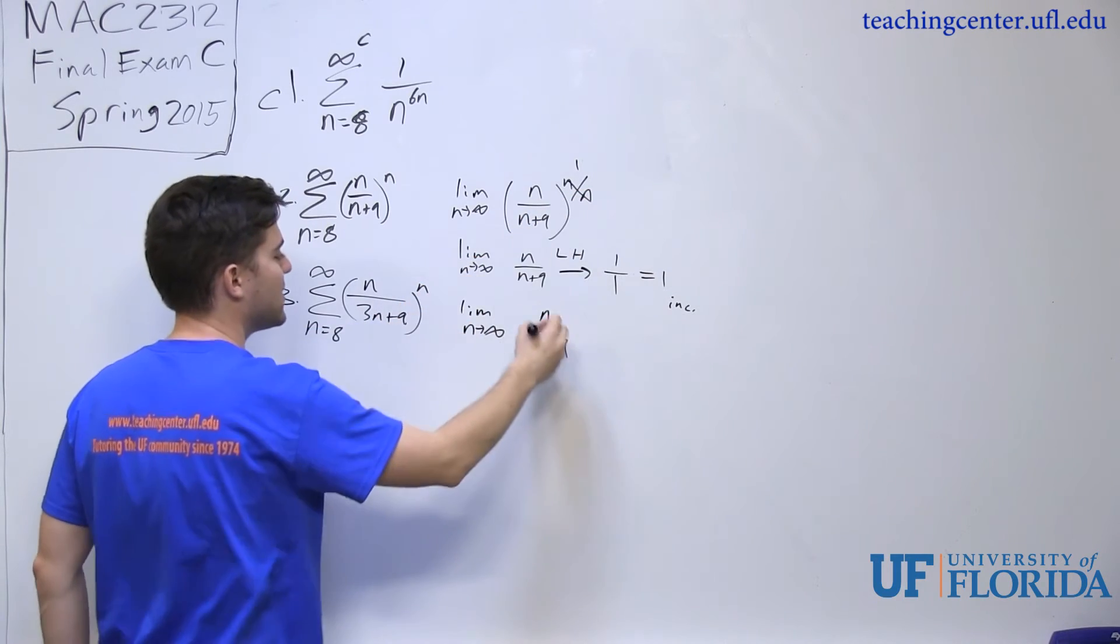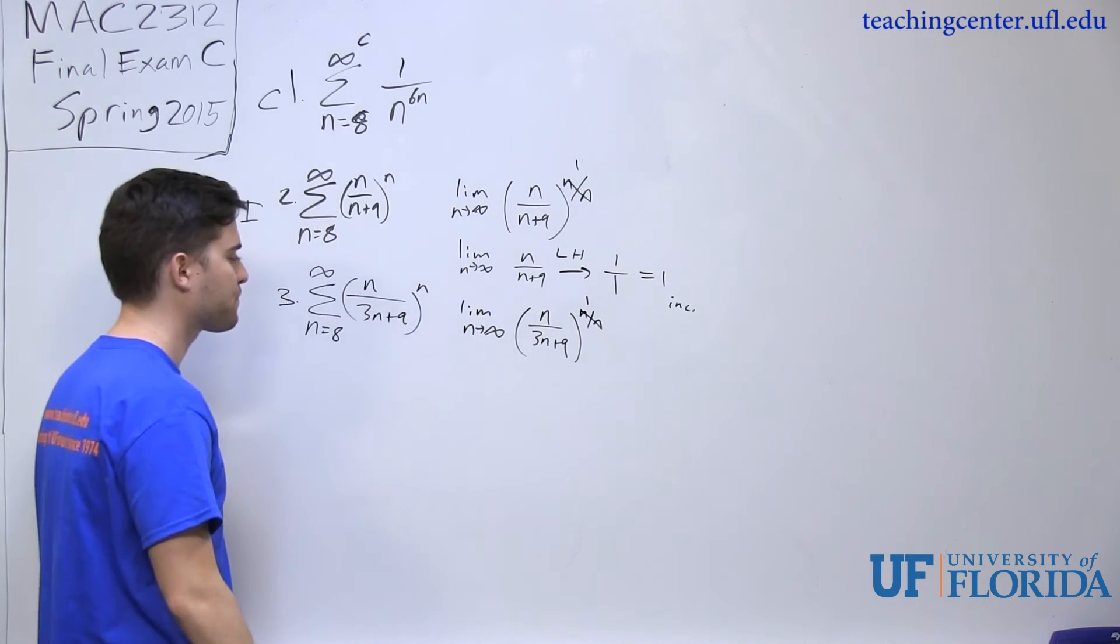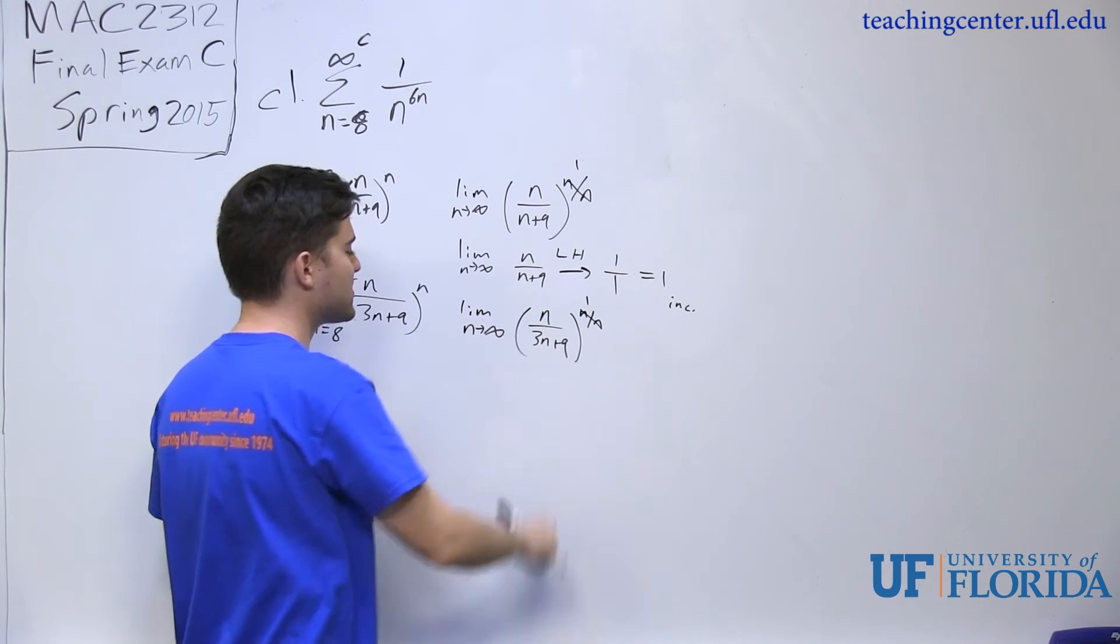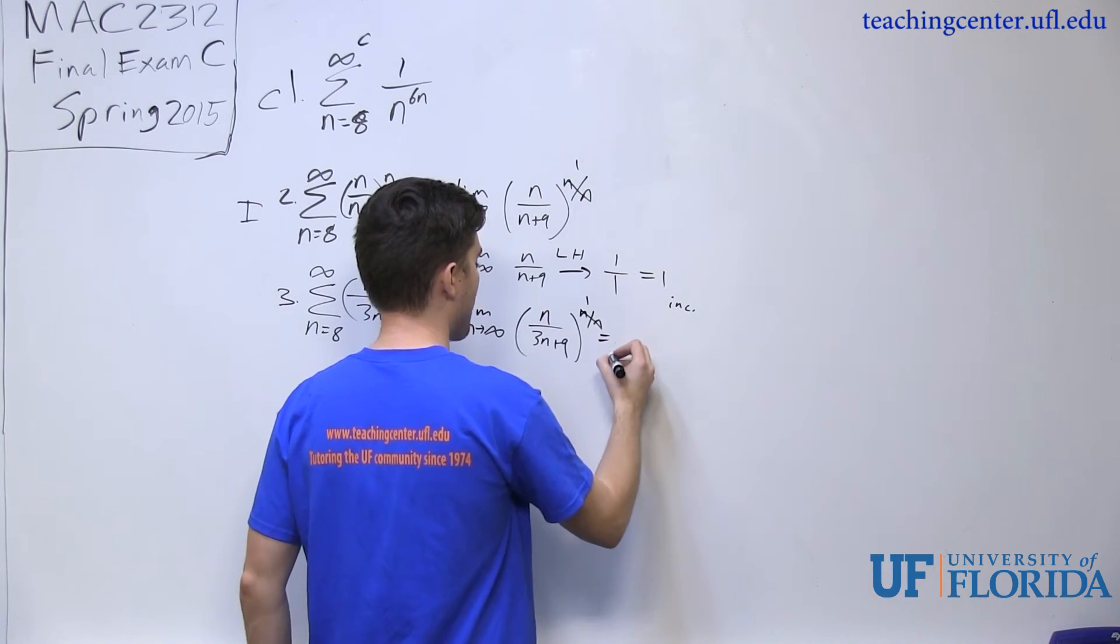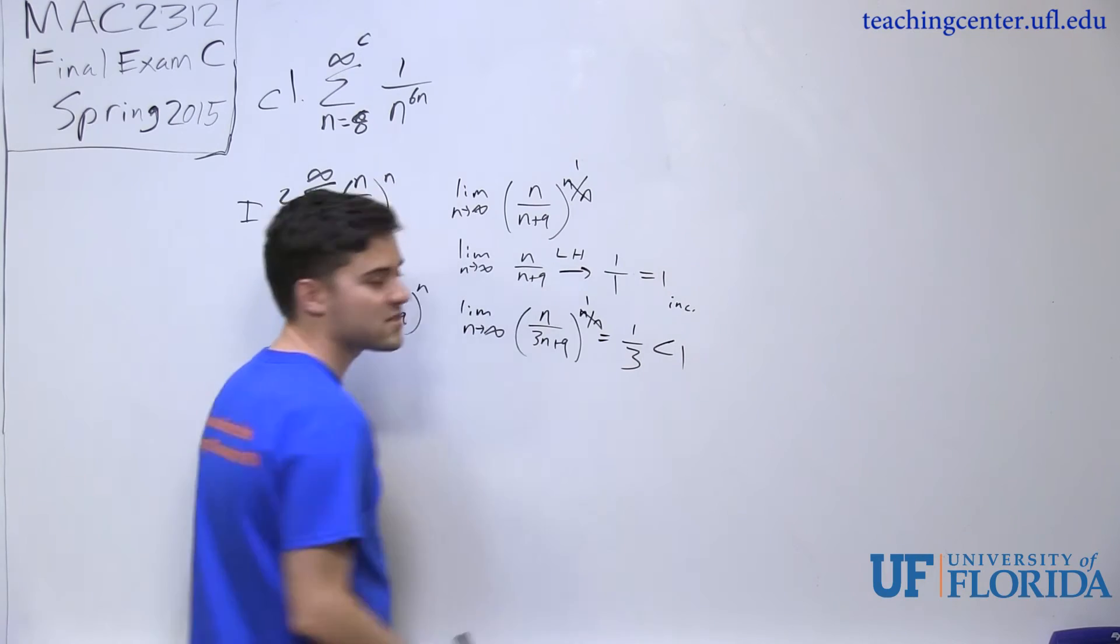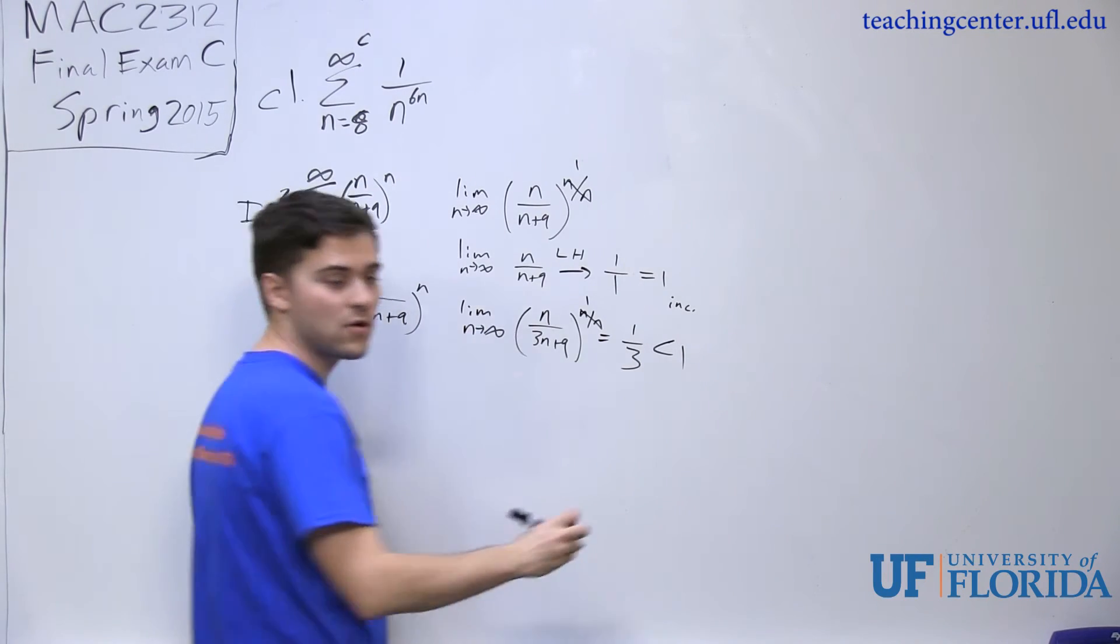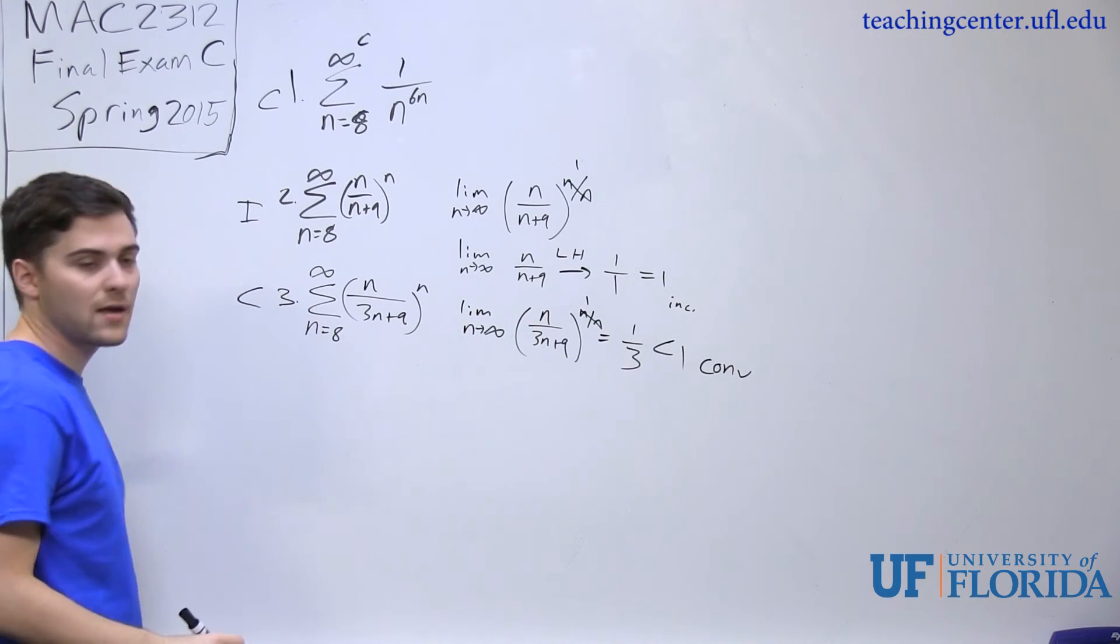So if I take n over n just like I did here, I end up with n over 3n plus 9 which comes to the first power. Now if I take the limit of this as n approaches infinity, again, it's indeterminate. So I can apply L'Hopital's rule to it. And then I end up getting 1 third. Because 1 third is less than 1, this series is convergent. So number 3 is convergent.